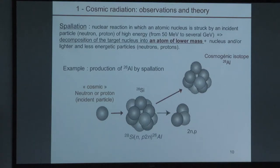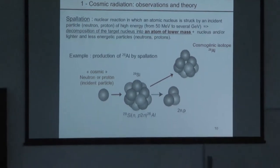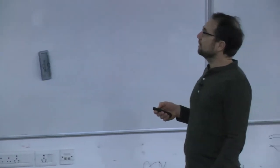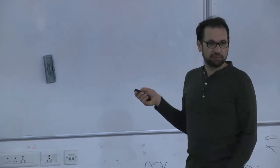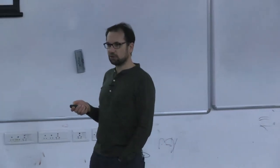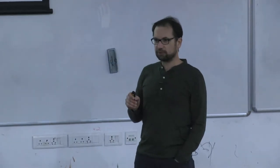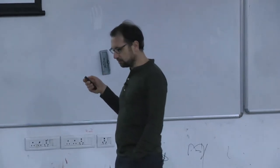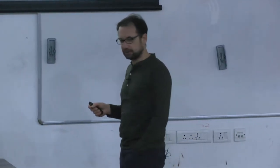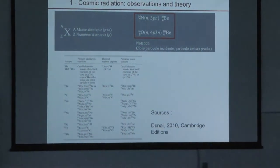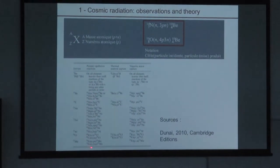This explains why the atmospheric cosmogenic isotopes are limited. When cosmic particles collide with atmospheric nitrogen or oxygen — atoms of lower mass than aluminium-26 — you cannot produce aluminium-26 or chlorine-36 in the atmosphere. You can only produce cosmogenic isotopes smaller than the target atoms of nitrogen and oxygen, such as beryllium-10, C-14, or helium-3.